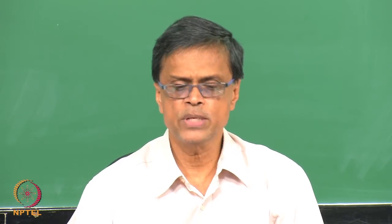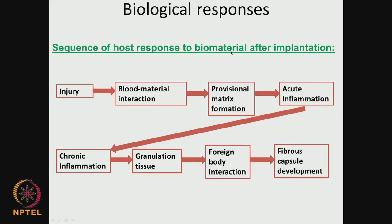There is a sequence of events that happen as soon as the biomaterial is implanted into the system. The place where it is implanted is considered a site of injury. There could be a blood-material interaction — for example, if it is a cardiovascular stent or a diaphragm valve, there is going to be a blood-material interaction. Whereas if it is in the ureteral region, this is not going to happen.